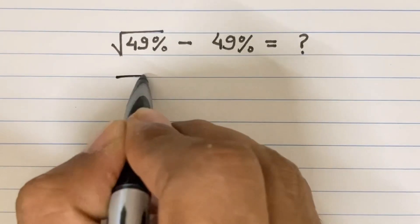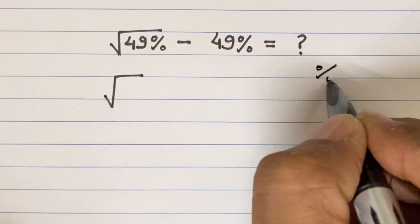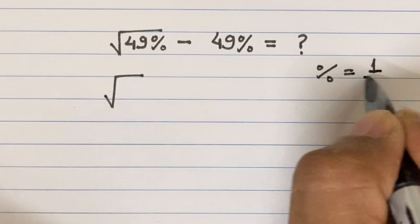So this is square root of 49 percent. As you must know that percentage is also equals to 1 divided by 100.